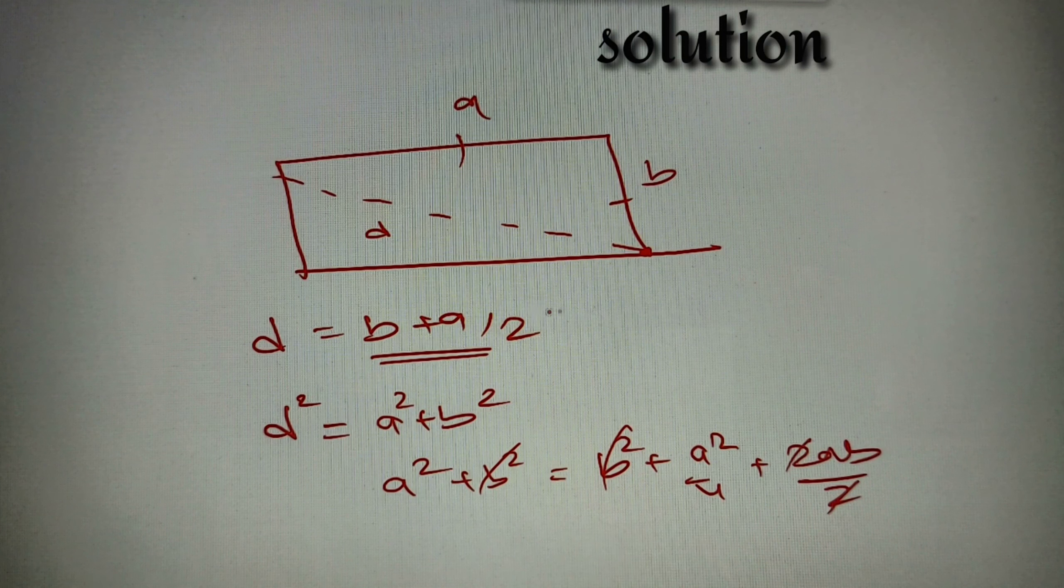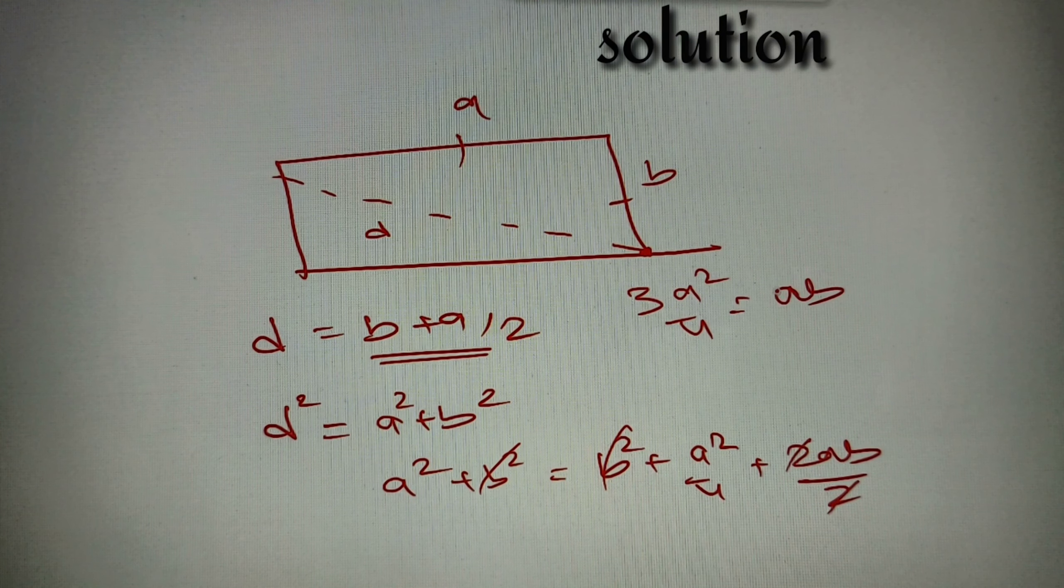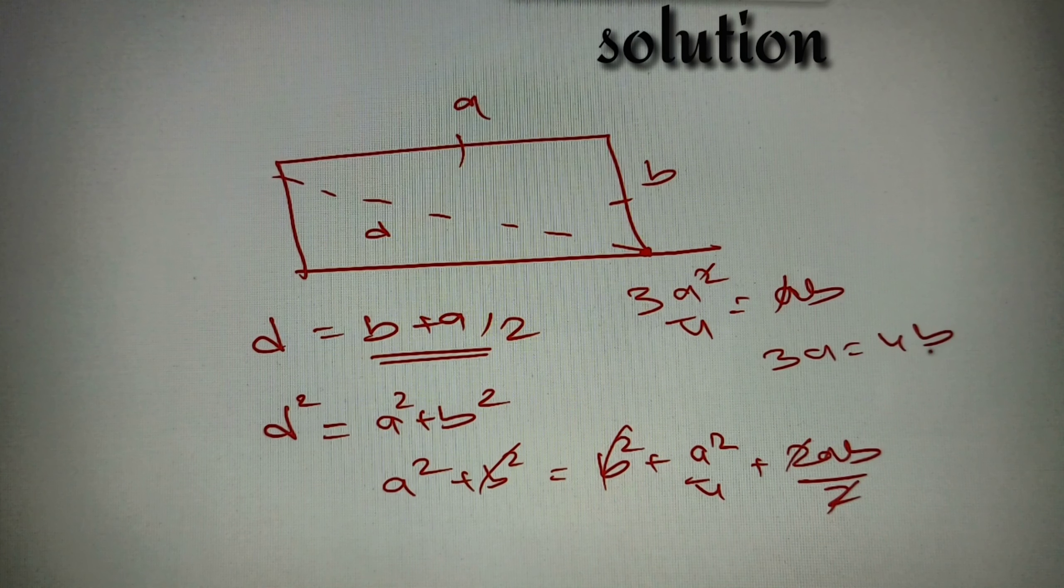If we take A square by 4 to LHS, we'll get 3A square by 4 equals AB. The A and this A square will get cancelled and we'll get 3A equals 4B.